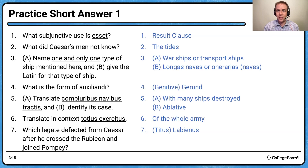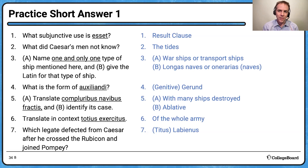Question 5 is a two-parter: translate 'compluribus navibus fractis.' This is an ablative absolute — 'with many ships destroyed.' Part B identifies its case: ablative. You don't even have to say ablative absolute — just 'ablative' is fine. Question 6: translate in context 'totius exercitus.' 'Translate in context' means translate it according to its grammar. Since this is genitive, translate it as 'of the whole army.' If you don't show it's genitive, you're not translating in context.